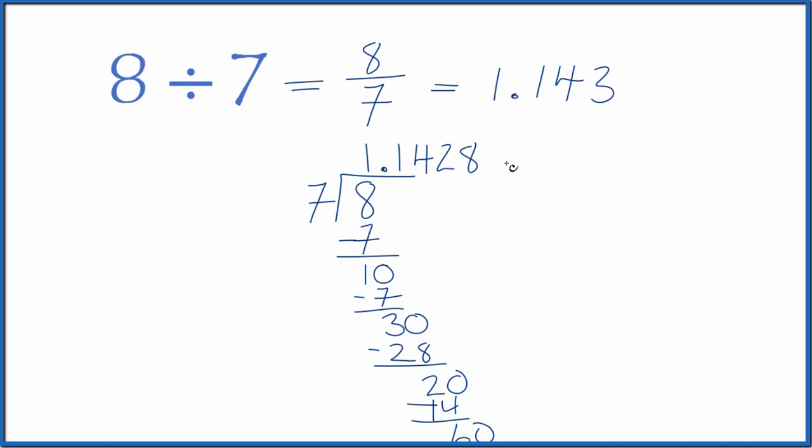You could keep going if you need more numbers. This is Dr. B. Dividing 8 by 7, you get the fraction 8 sevenths or the decimal 1.143. And this is rounded. Thanks for watching.